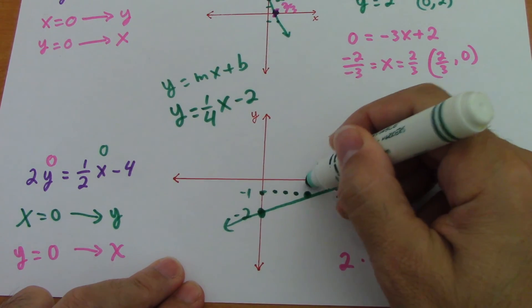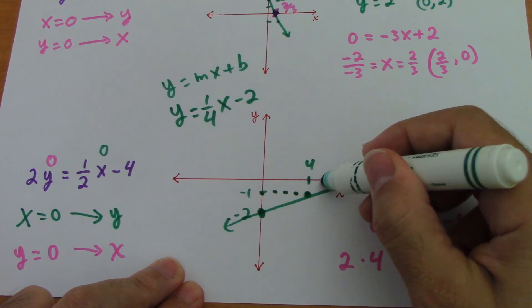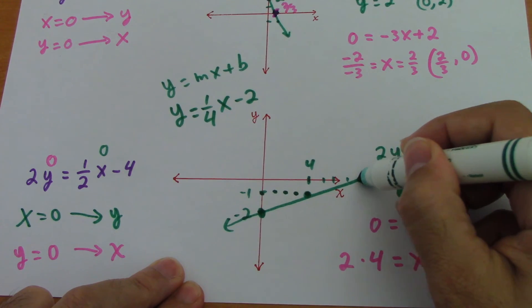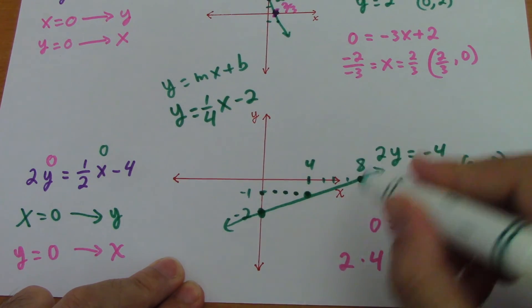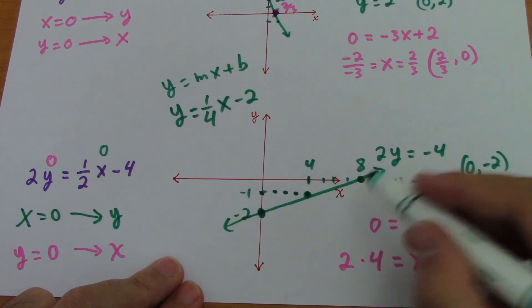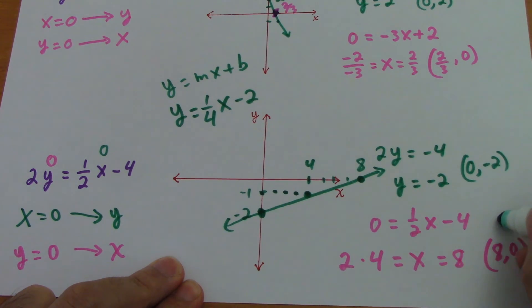Now if this is 4, 5, 6, 7, 8. Being 8 is where the line crossed the x axis. And here we have 8 comma 0. 8 in x, 0 in y.